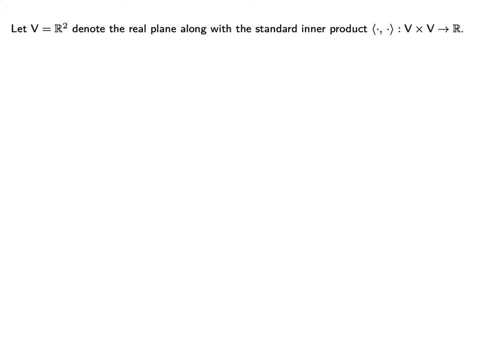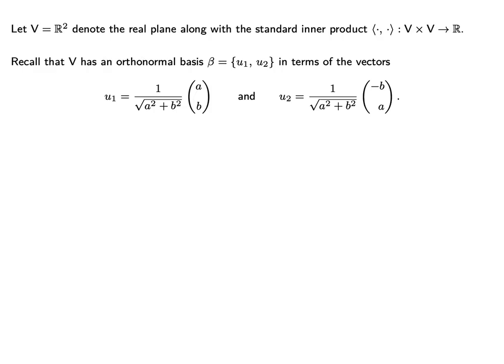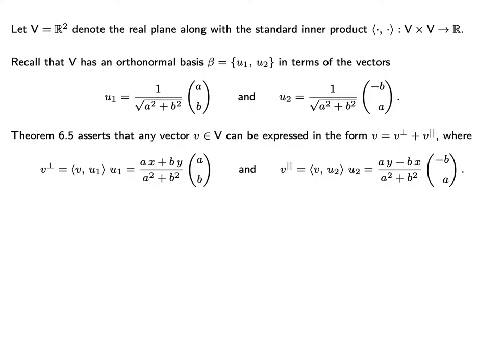Say that we have the standard inner product on the real plane R2. Recall that we have lots of orthonormal bases we can choose from. Here we have an example in terms of two real numbers A and B, not both zero. We've seen before that we can express any vector v as a linear combination of elements from the space. In particular, we can write any vector in terms of the inner product of v and u1 times the vector u1, plus the inner product of v and u2 times the vector u2.